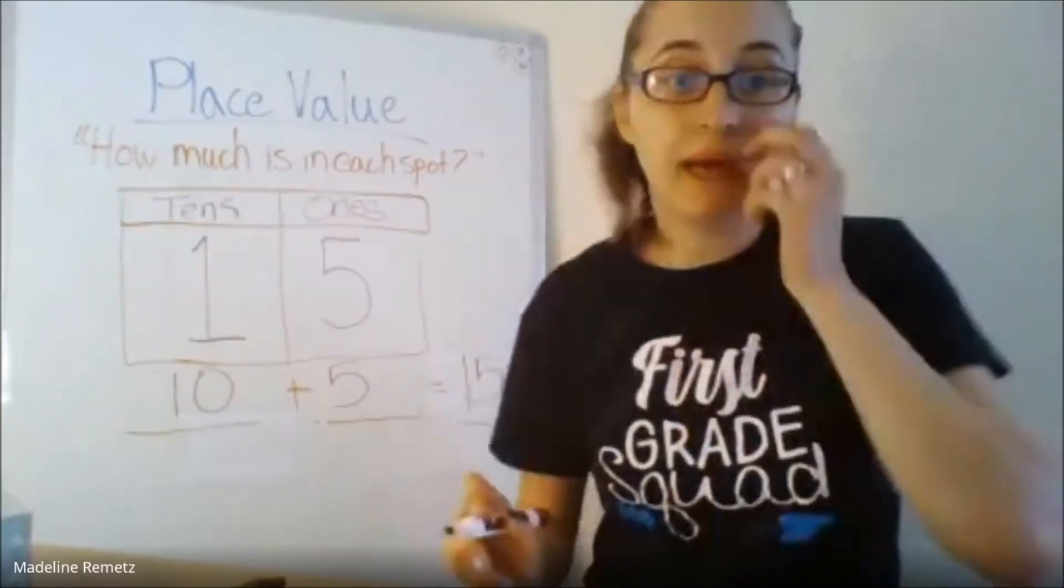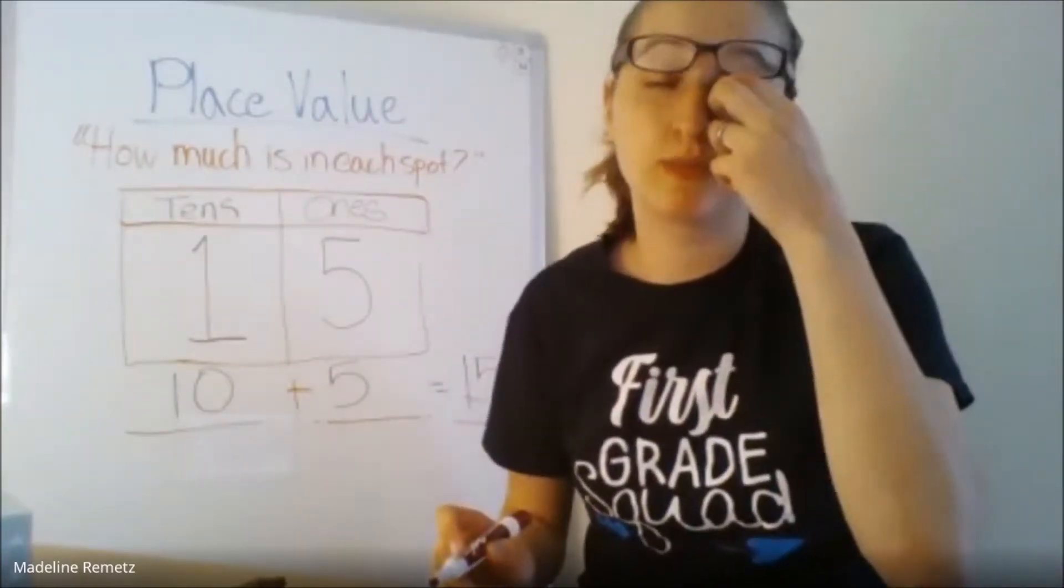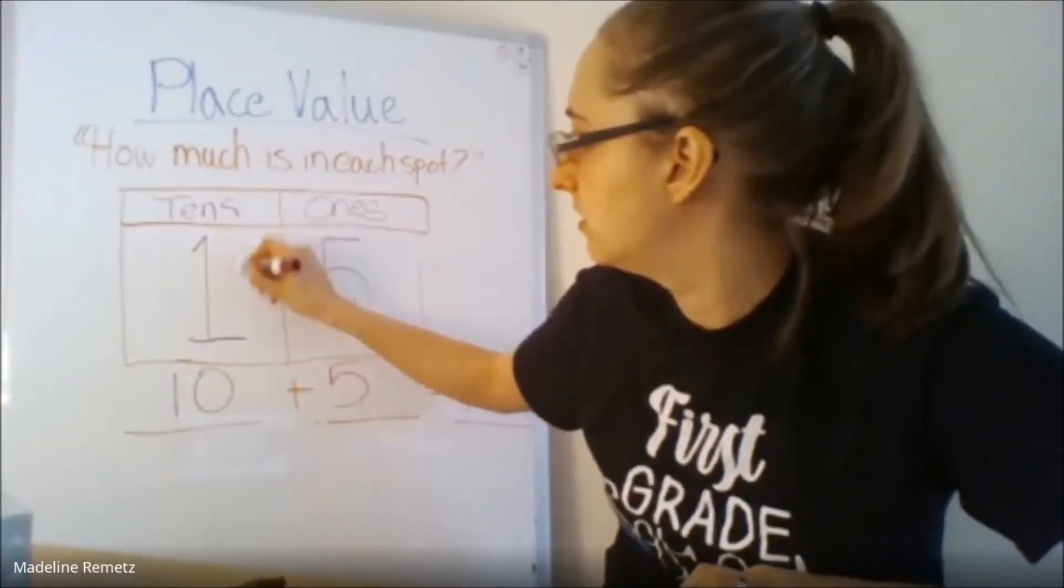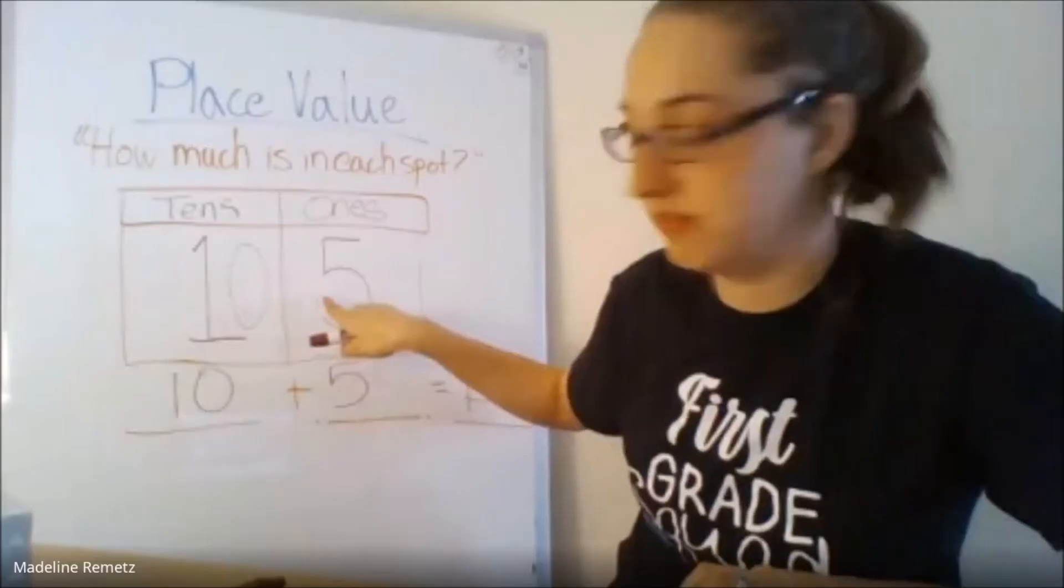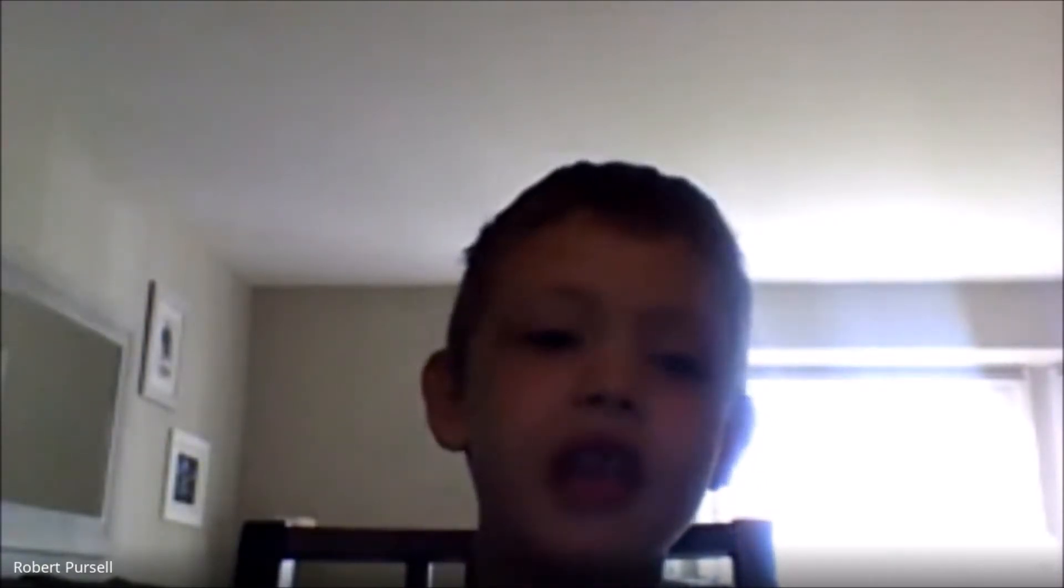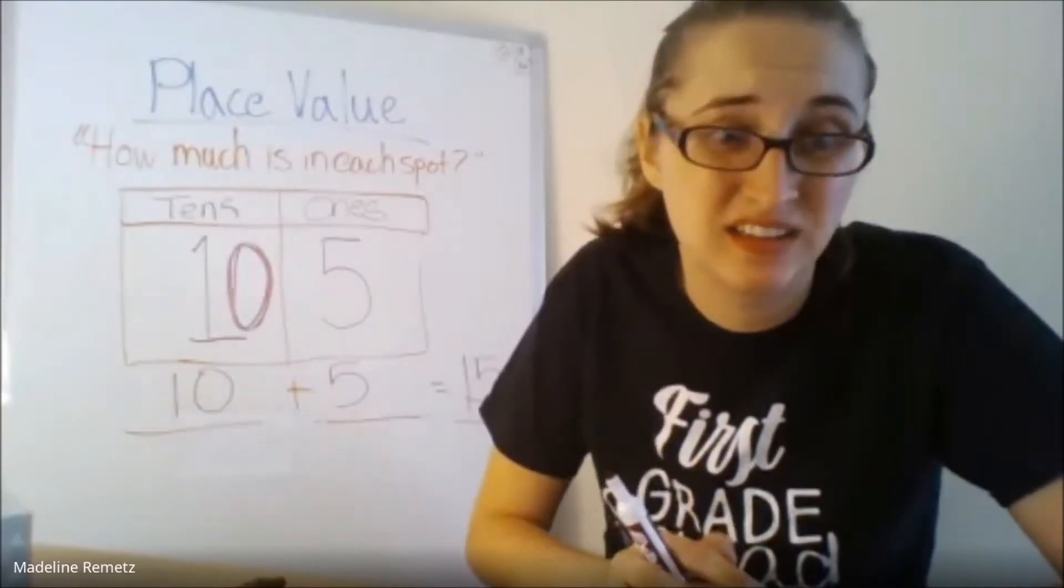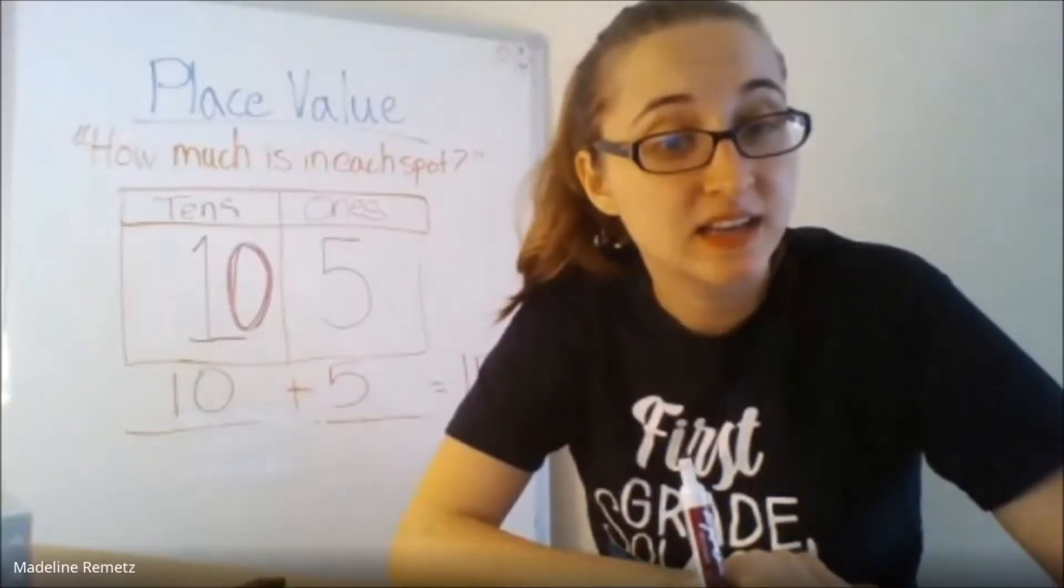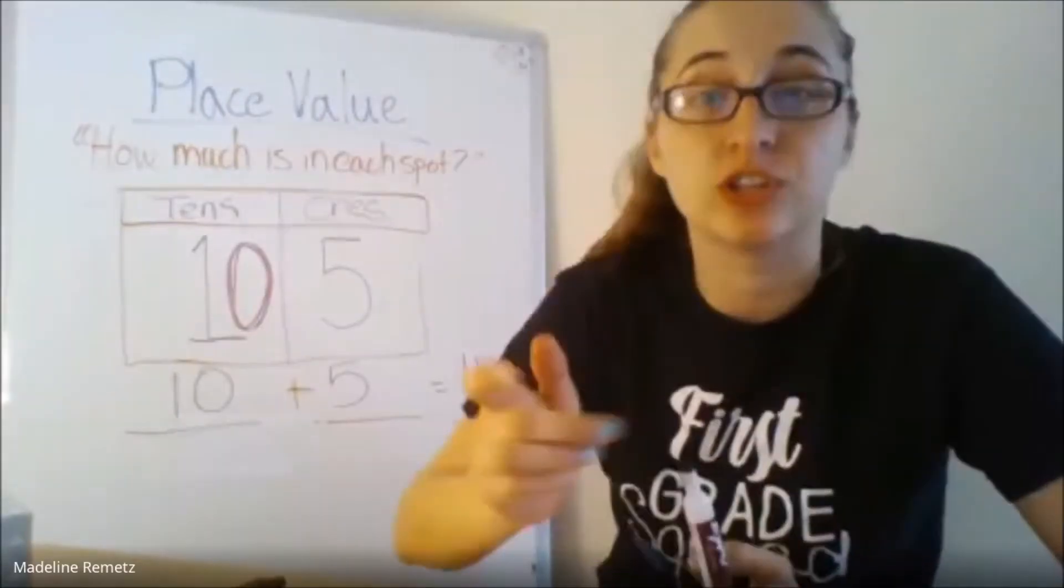So when you're writing your place value, you would see that it's the same as saying 10 plus 5 equals 1 ten, 5 one's, equals 15. But Robert, if you could unmute yourself, why didn't I write my number like this? 10 and 5. Because then it would be a hundred and five. He's right.